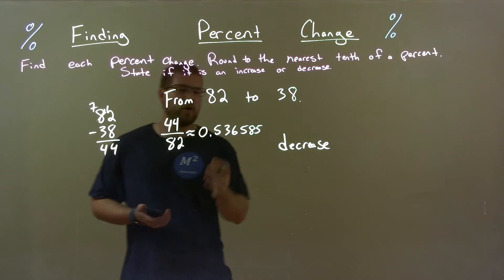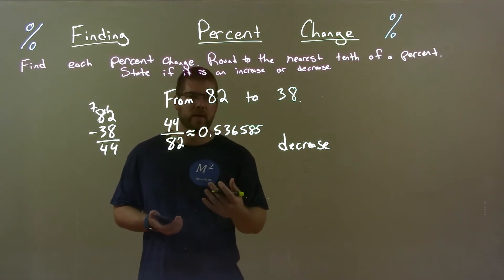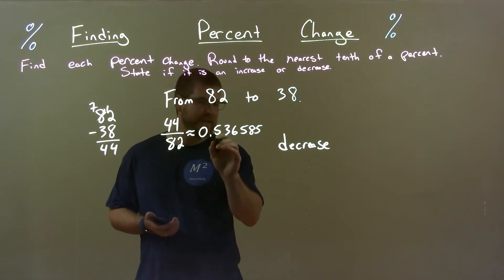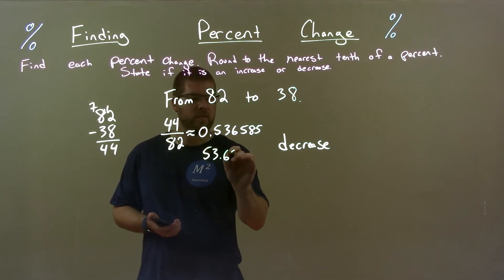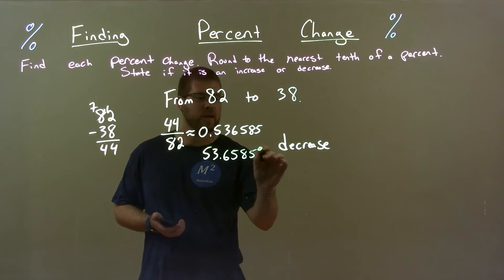Now we need to convert that to a percent. So to convert that to a percent, we move the decimal place two spots to the right. So we have 53.6585%.